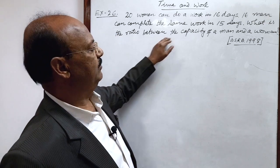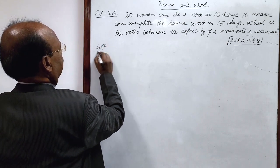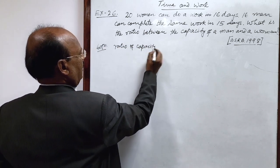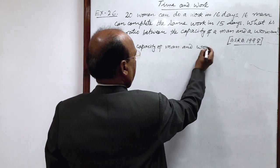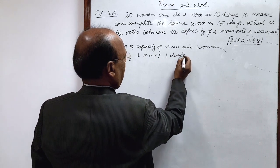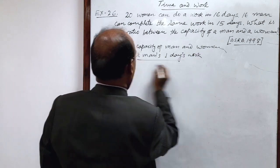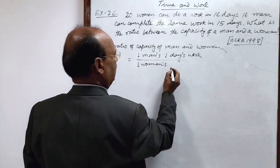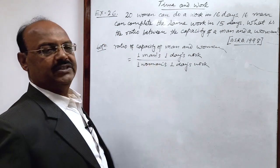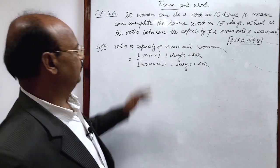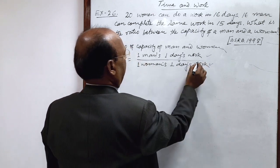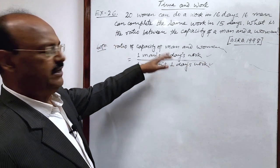How to find the ratio between the capacity of a man and a woman? The ratio of capacity of man and woman is equal to one man's one day's work upon one woman's one day's work. So here we need to find out one man's one day's work and one woman's one day's work. First we will find out these two quantities, then we will divide them to get the answer.